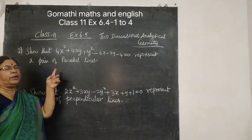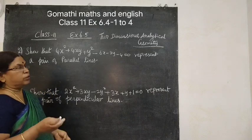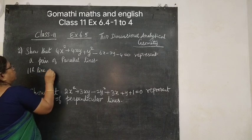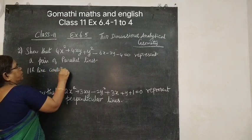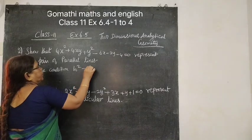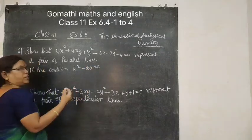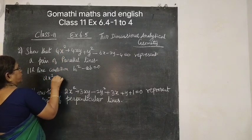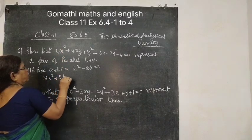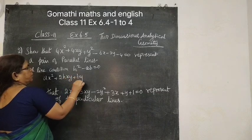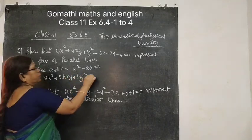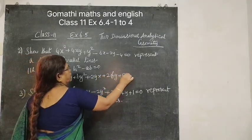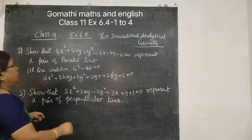Show that this represents a pair of parallel lines. Parallel line condition is H squared minus AB equal to 0, or H squared equal to AB. So if you compare it to AX squared plus 2HXY plus BY squared plus 2GX plus 2FY plus C equal to 0, compare it, we can get it.